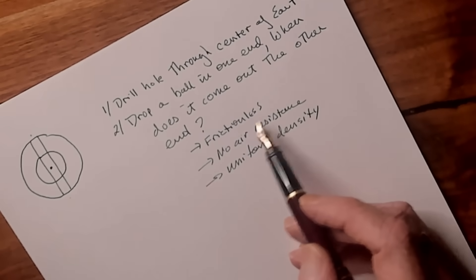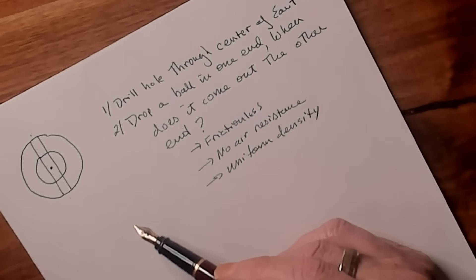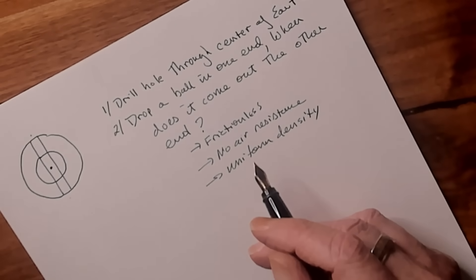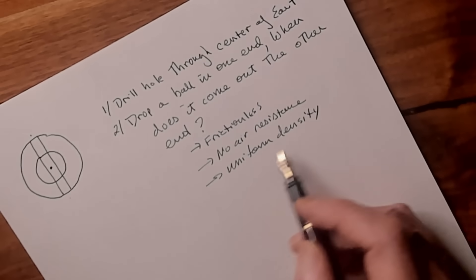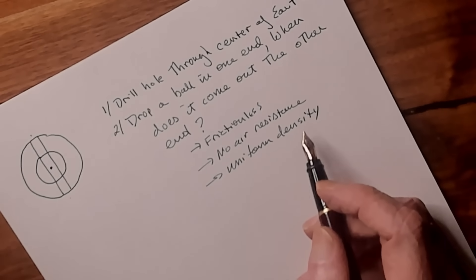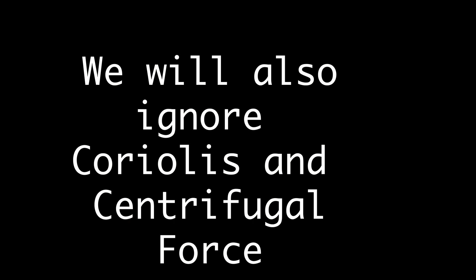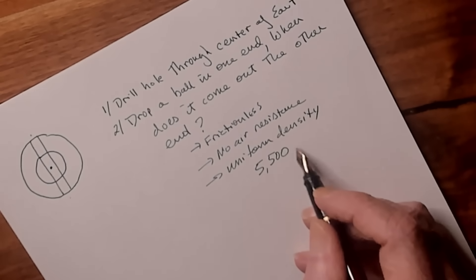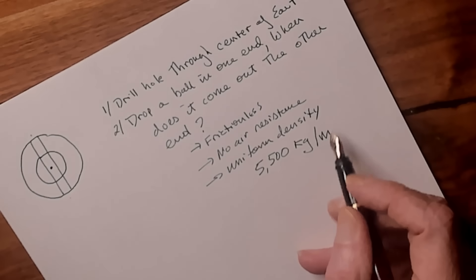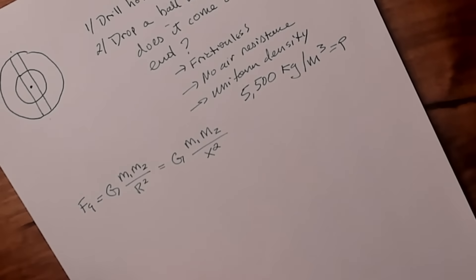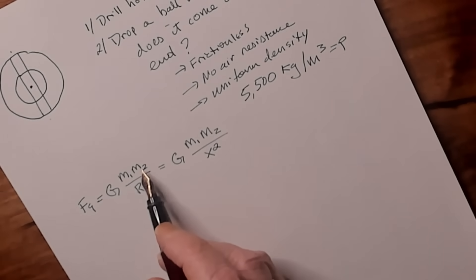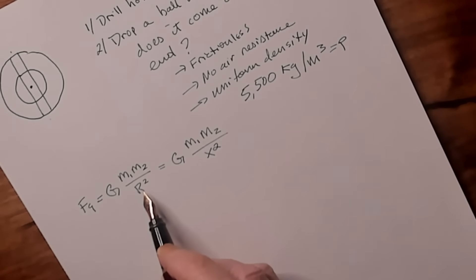First of all, the tunnel has to be frictionless — there can't be any friction from the sides of the tunnel, there can be no air resistance, so essentially it's going to have to be in a vacuum. And we're going to treat the Earth as being of a uniform density. From Cavendish, we know that density is about 5,000 kilograms per cubic meter. The force of gravity equals the gravitational constant times mass 1 times mass 2, divided by the square of the radius separating them.